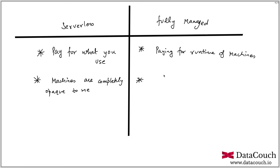When we talk about fully managed, you specify the infrastructure. For example, when creating a Dataproc cluster on Google Cloud Platform, you specify how many masters and how many workers. You can scale worker machines, but you still have visibility — you know whether you need one master or high availability on the master side. The number of machines is visible to you.